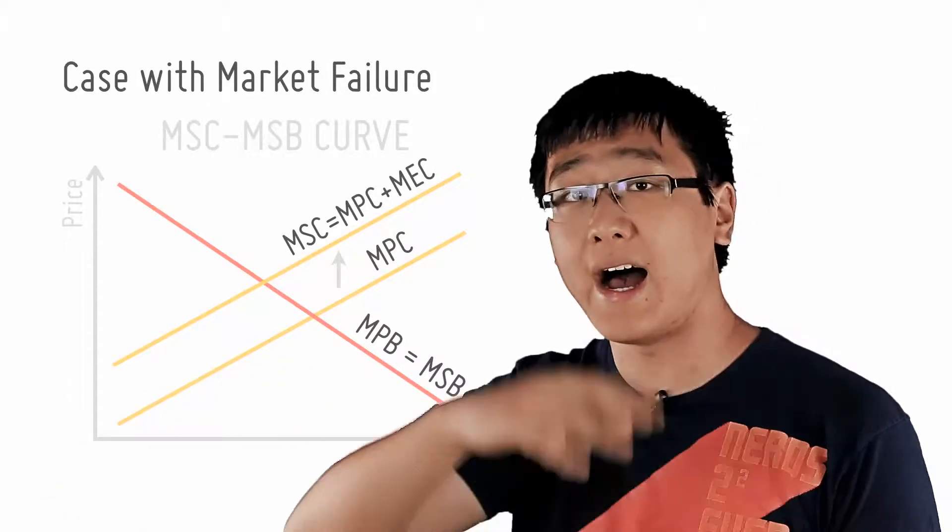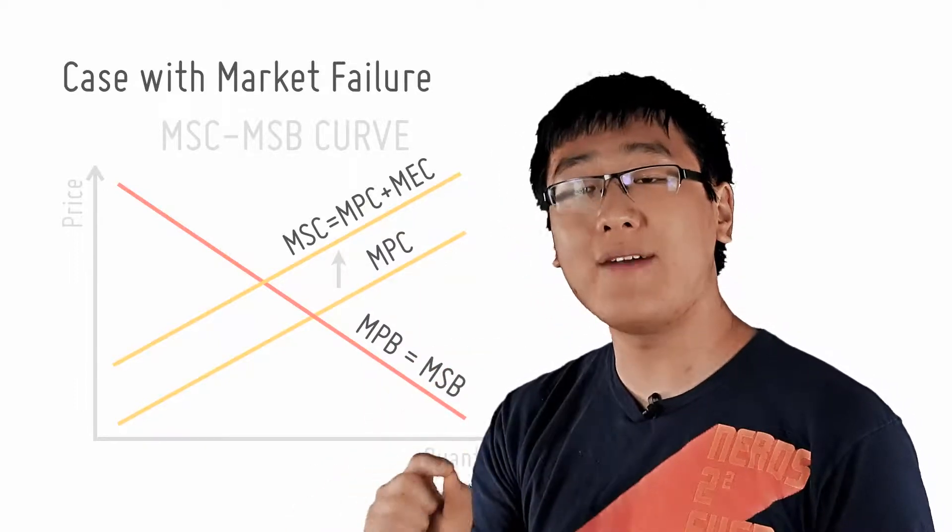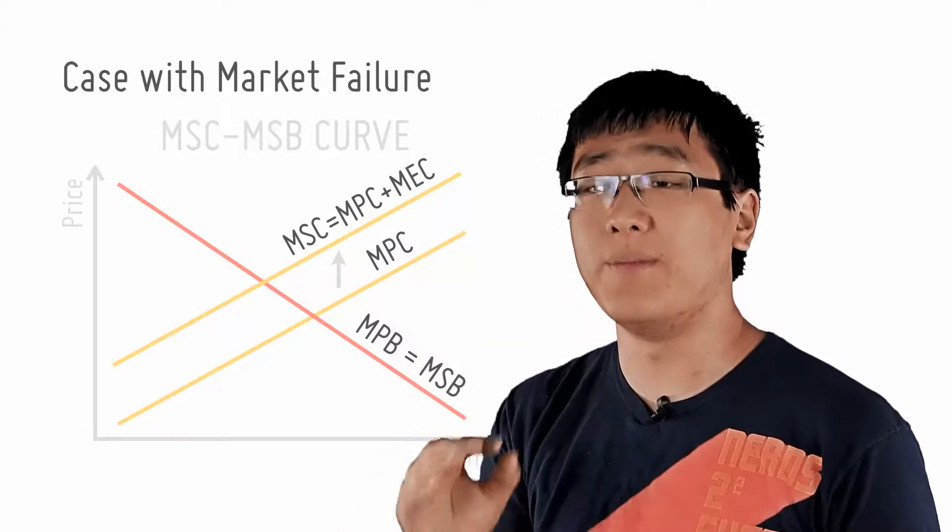Hence, it shows the entire cost of society. The MPC, on the other hand, basically shows the private cost, the cost to the firm itself.